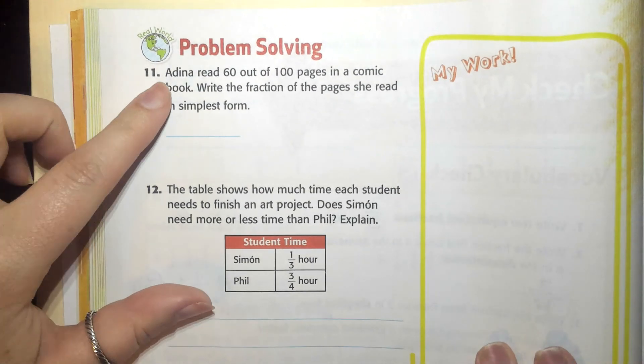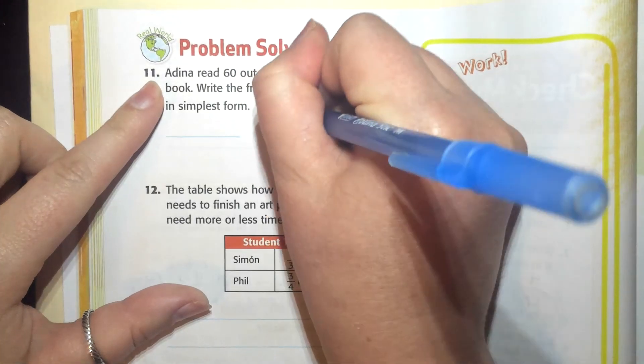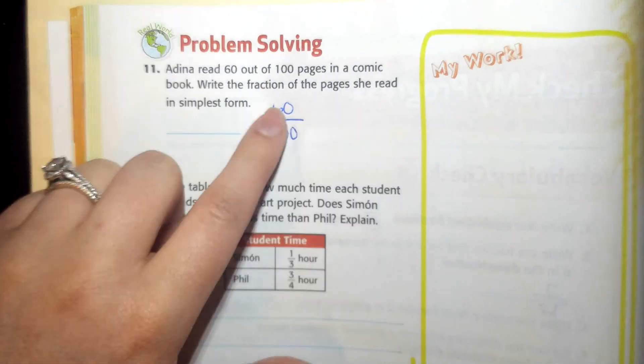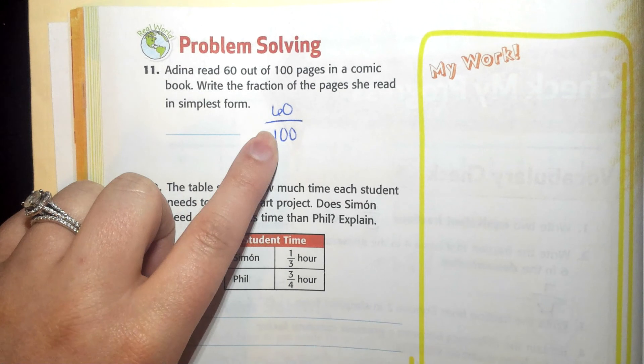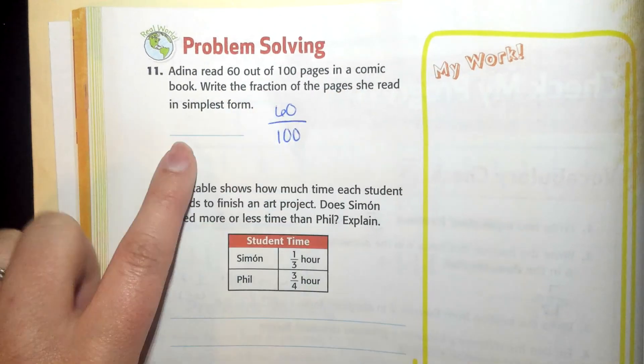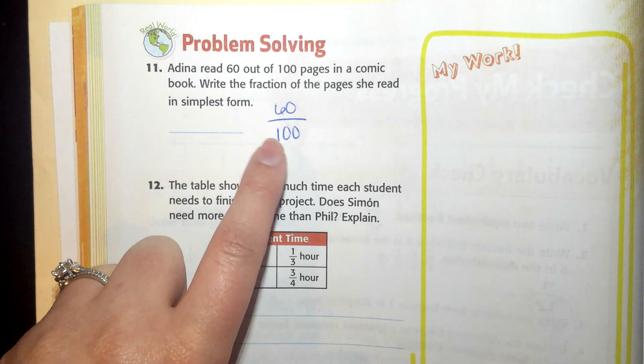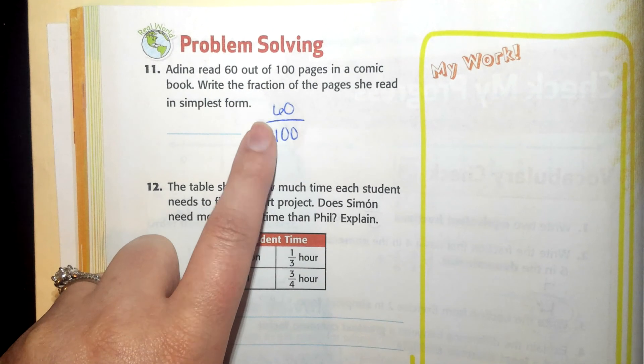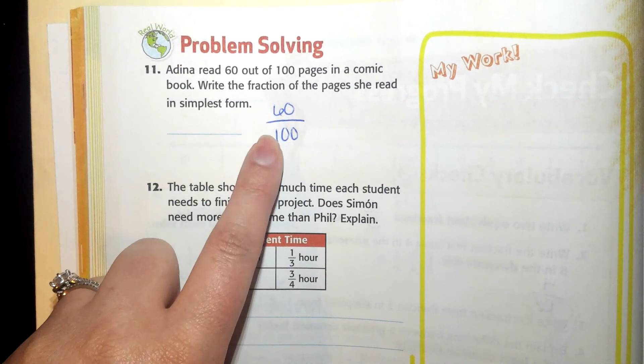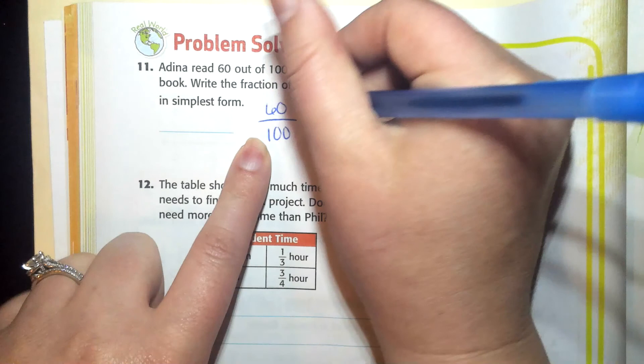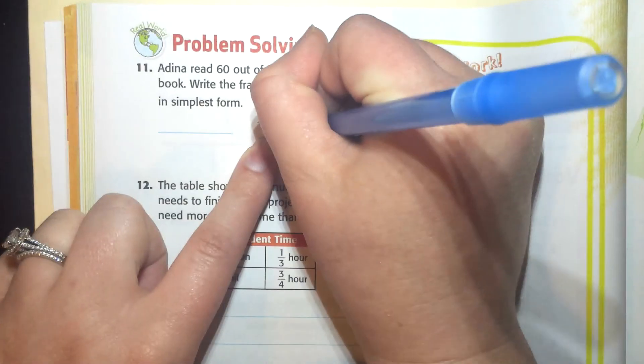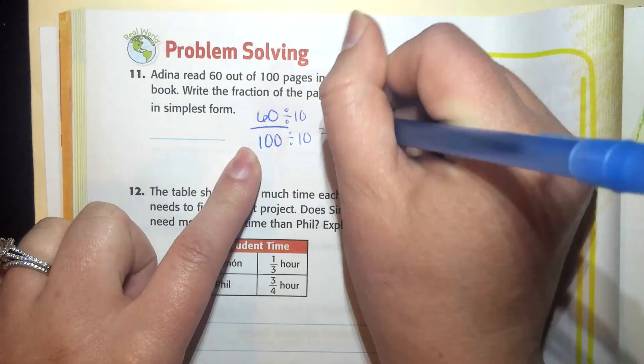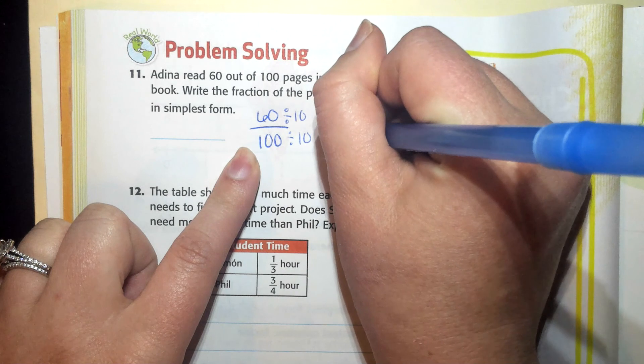So 11 says, Adina read 60 out of 100 pages in the comic book. 60 out of 100, right? 60 over 100. Write the fraction of pages she read in simplest form. Now, I know this one looks big, but thinking about numbers that end in zero, I know numbers that end in zero are divisible by two, but both of these numbers are also divisible by 10. So how could I start by dividing both the numerator and the denominator by 10? So 60 divided by 10 is six, and 100 divided by 10 is 10.